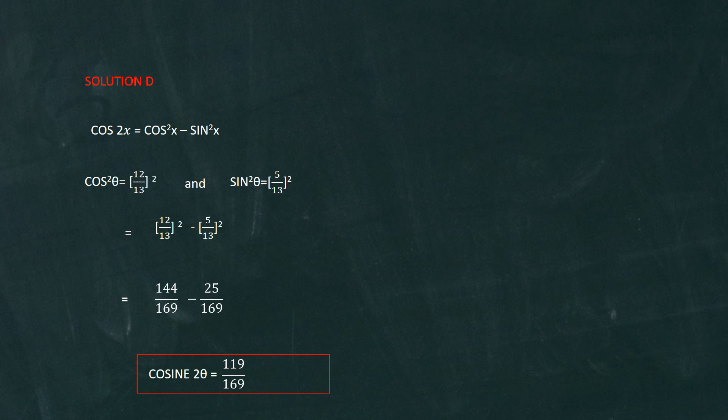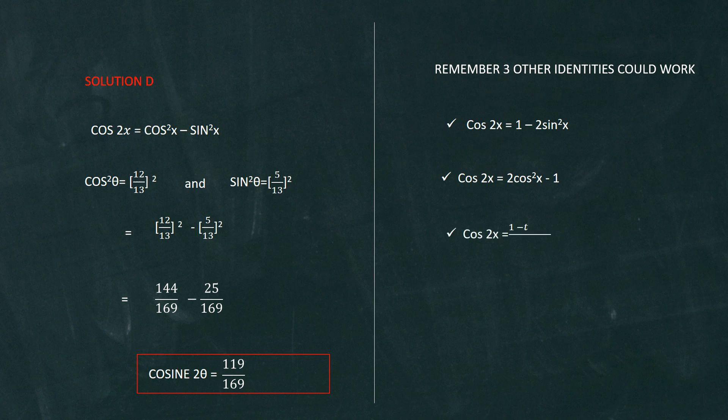That will be the solution for cos 2 theta. But like I said earlier, there are three other identities, and these are shown below. The first one is cos 2x is found by 1 take away 2 sine squared x. The second one is 2 cos squared x minus 1. And the third one is 1 minus tan squared x over 1 plus tan squared x. Remember, if you use any of these three other identities, you'll still come to the same solution of cos 2 theta is equal to 119 over 169.